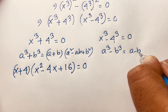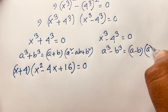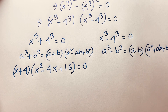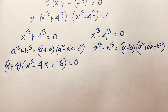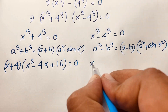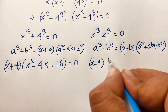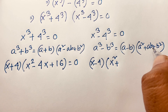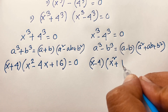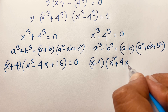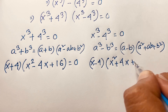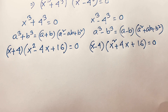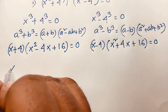For the second case, a cube minus b cube equals a minus b times a squared plus ab plus b squared. So here we get x minus four, times x squared plus four x plus sixteen, equals zero. We are finding four cases total from these two factored expressions.